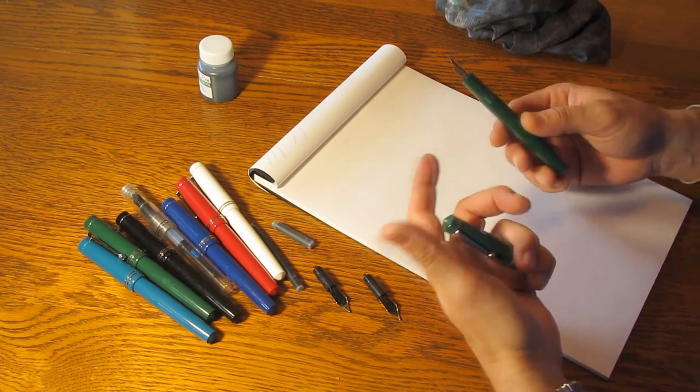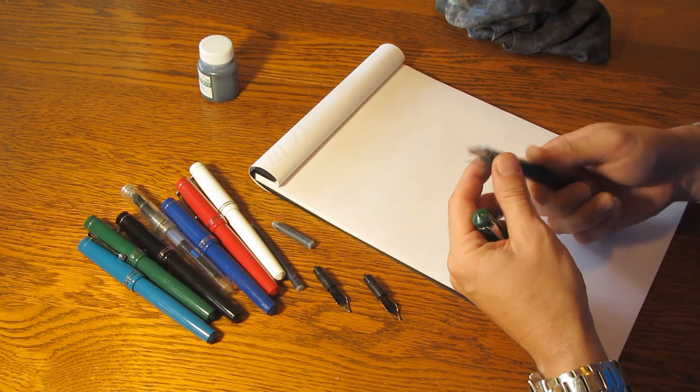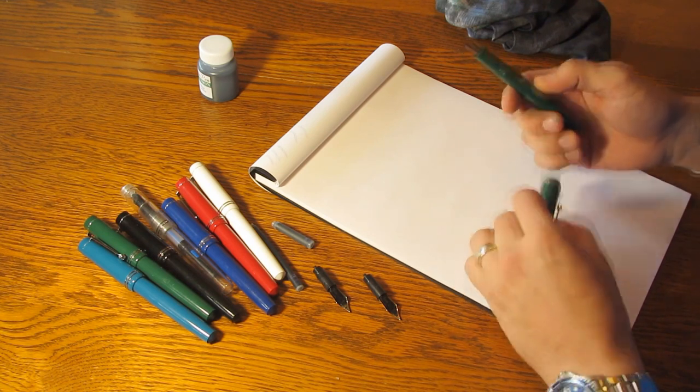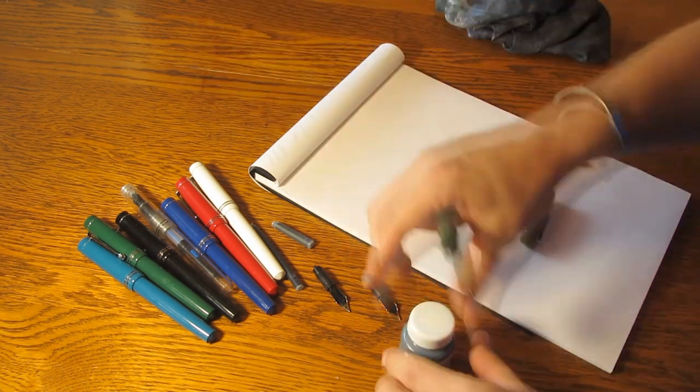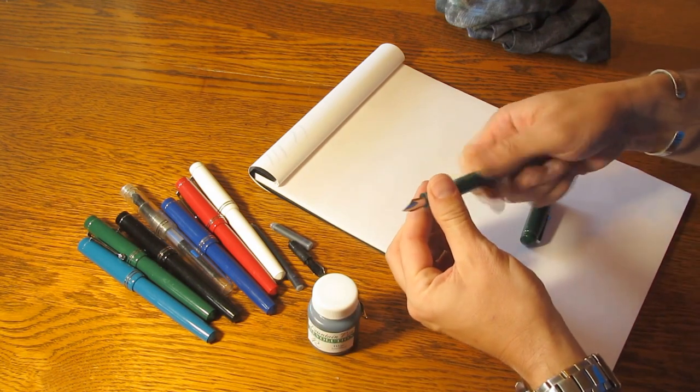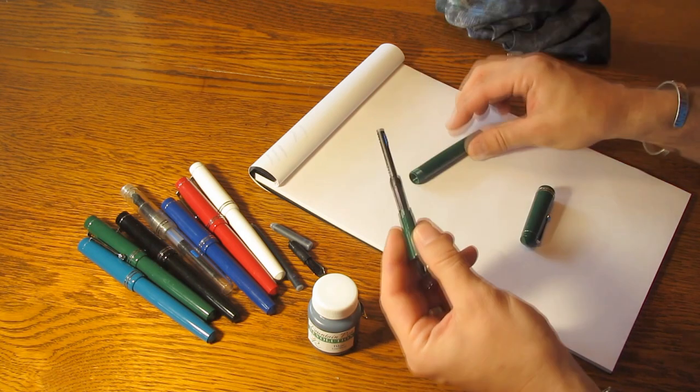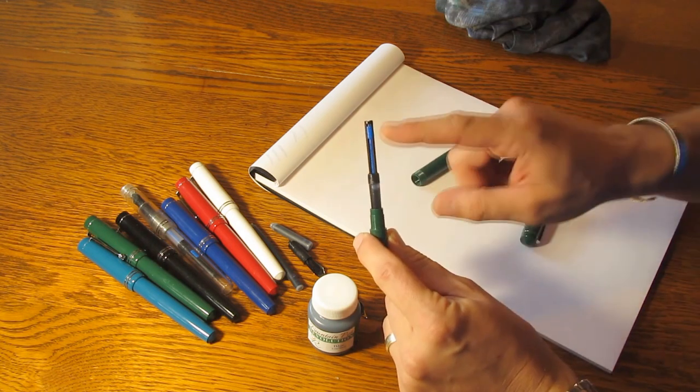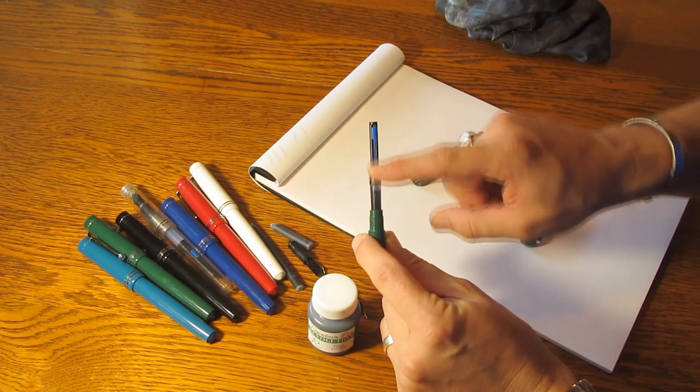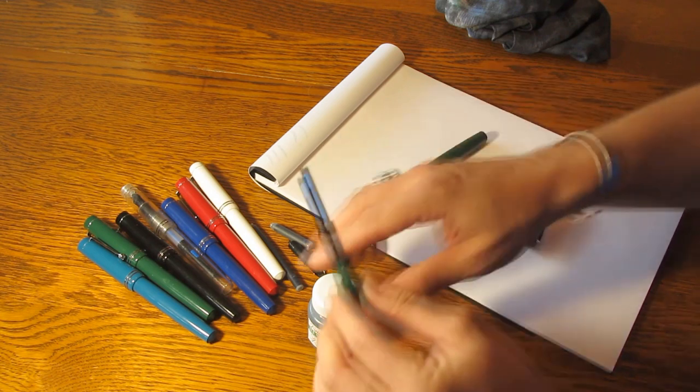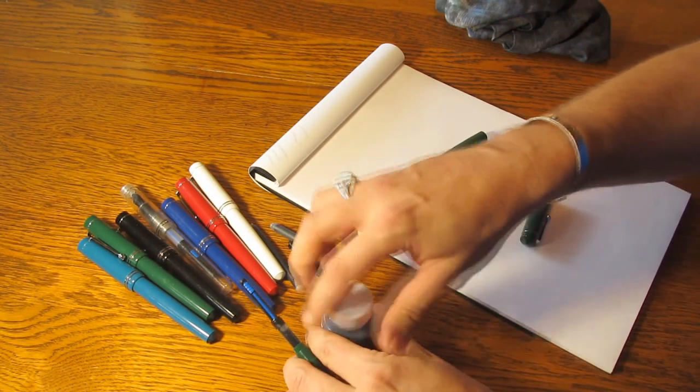We're going to talk about how to fill the pen, disassemble it, service it, all of those types of things. So let's start off with how to fill the pen. The FPR Darjeeling is a converter-filled pen, so as you unscrew the barrel, you'll find a pretty standard converter inside. This is a plunger style that slides up and down. Let's open our ink here.